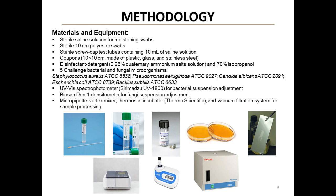Let's dive into our methodology. We used a variety of materials in our study. These included sterile saline solution for moistening swabs, sterile 10 cm polyester swabs, and sterile screw cap test tubes containing 10 ml of saline solution. We prepared coupons measuring 10 by 10 cm, made of three different materials: plastic, glass, and stainless steel. These materials were chosen to represent the various surfaces found in pharmaceutical manufacturing equipment.